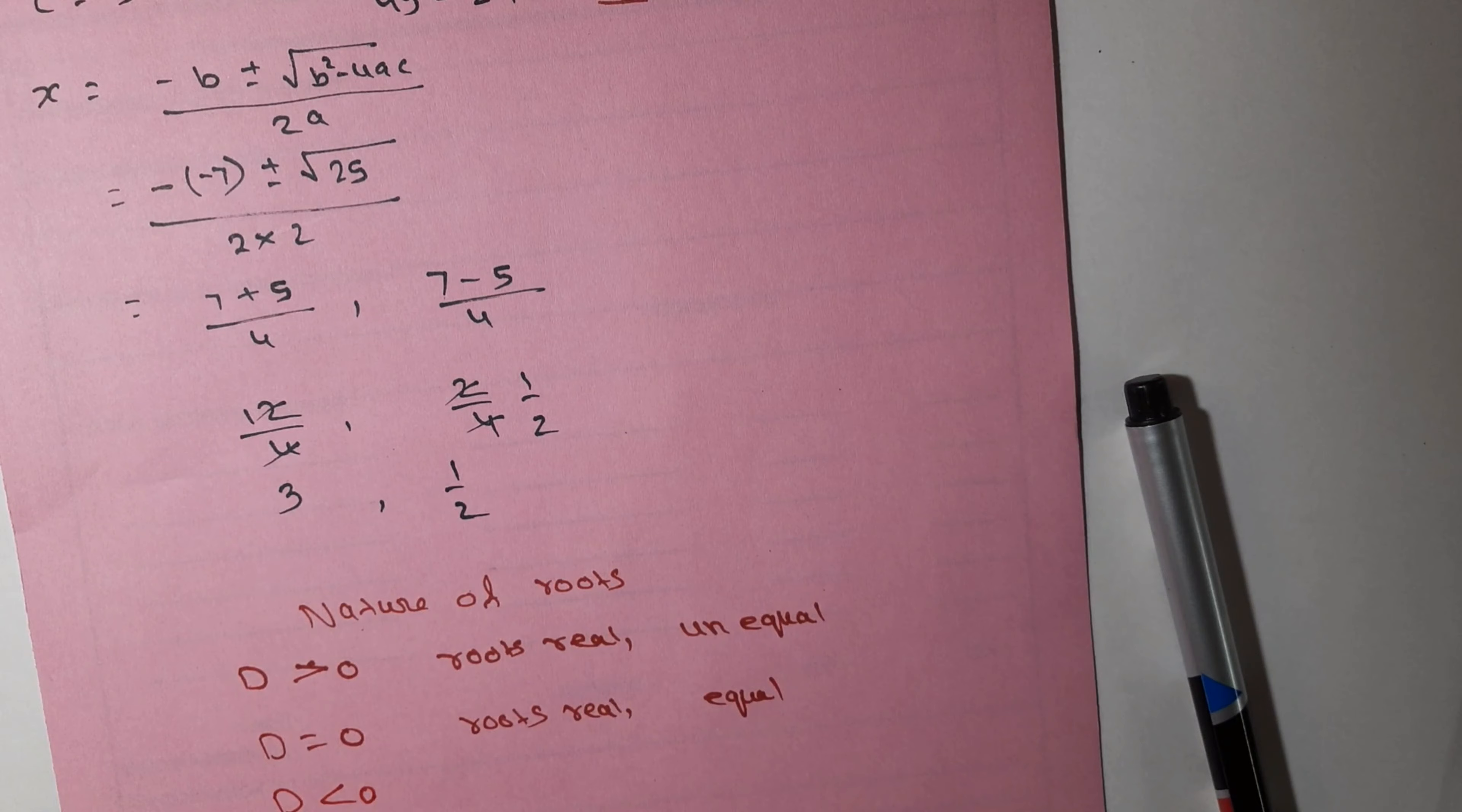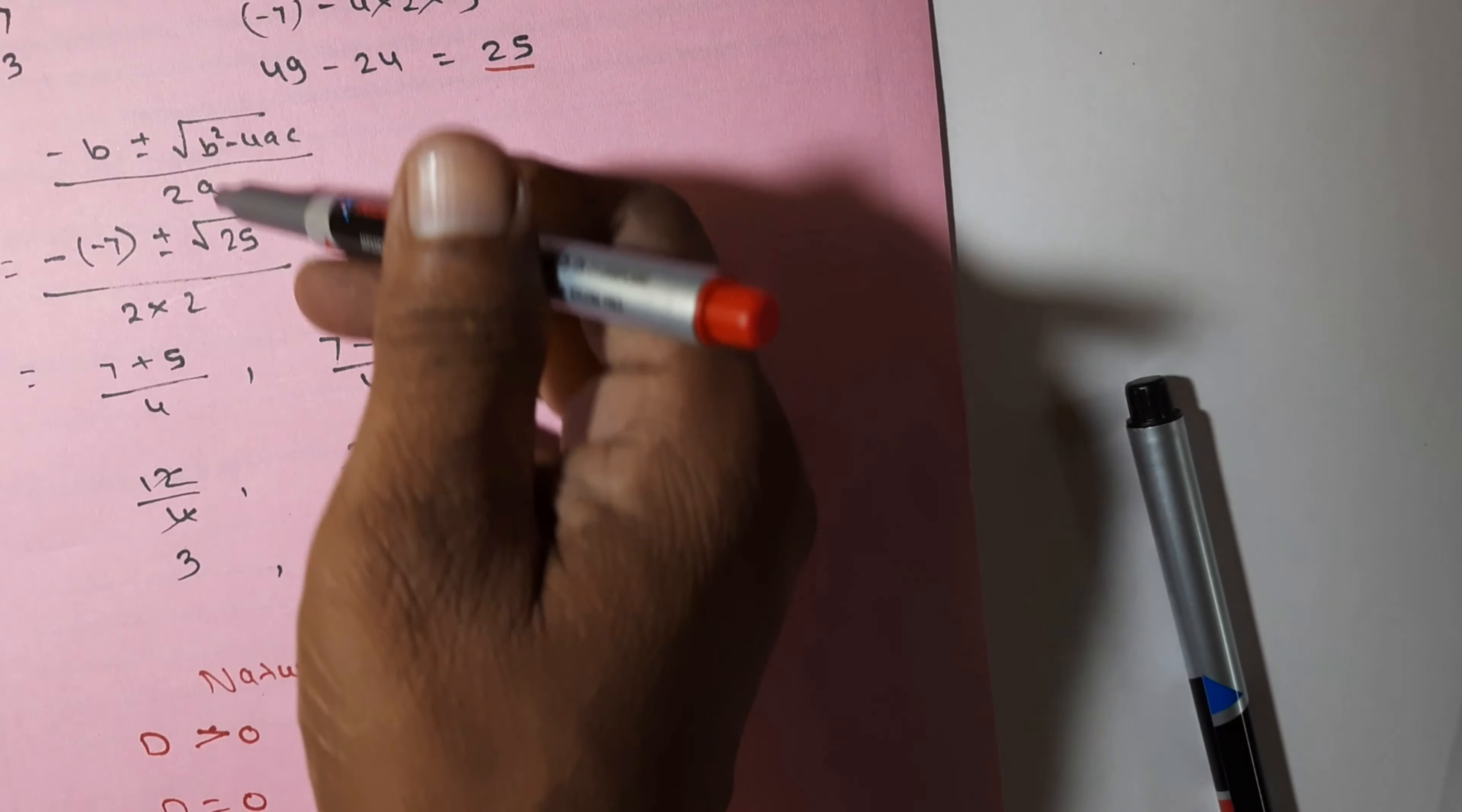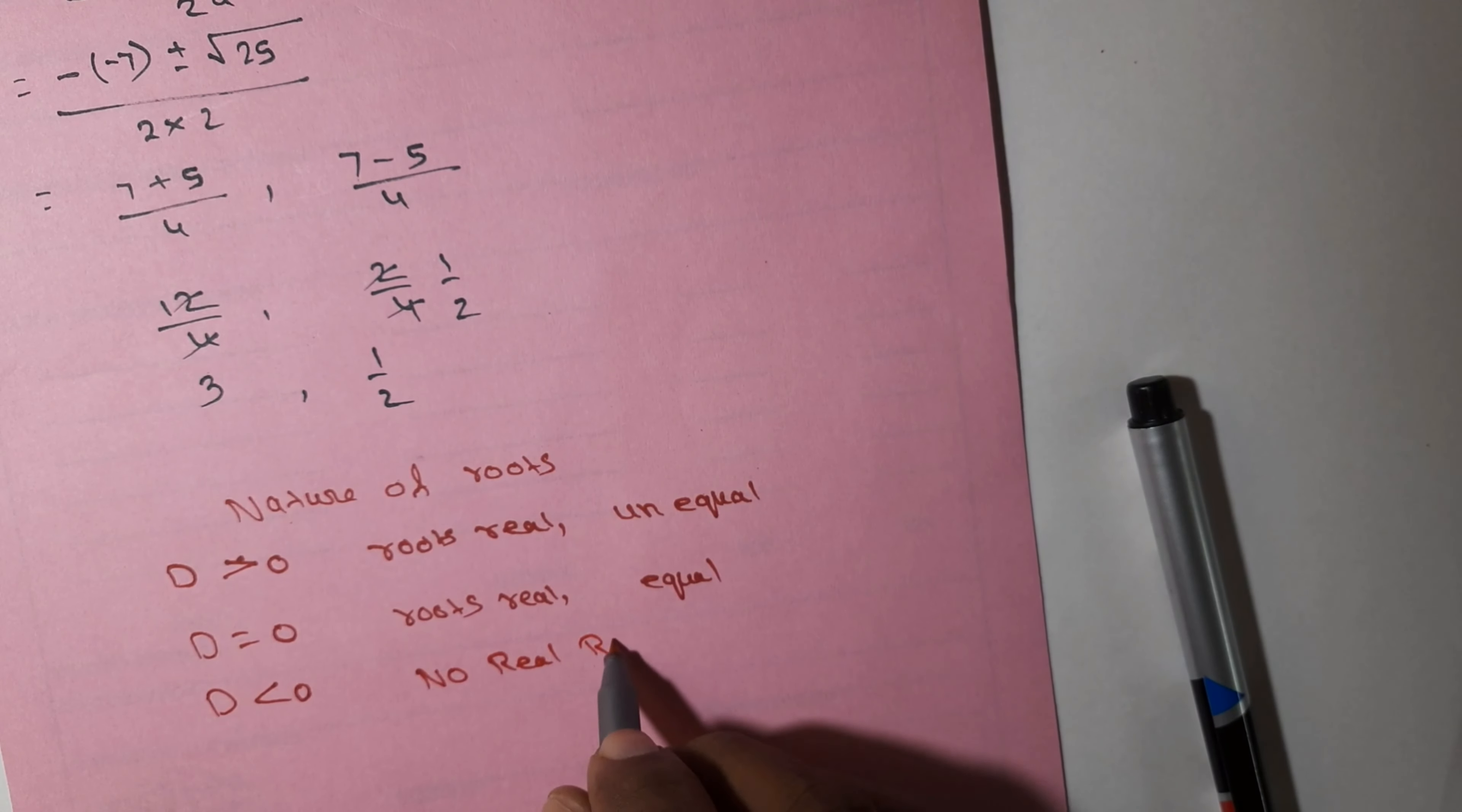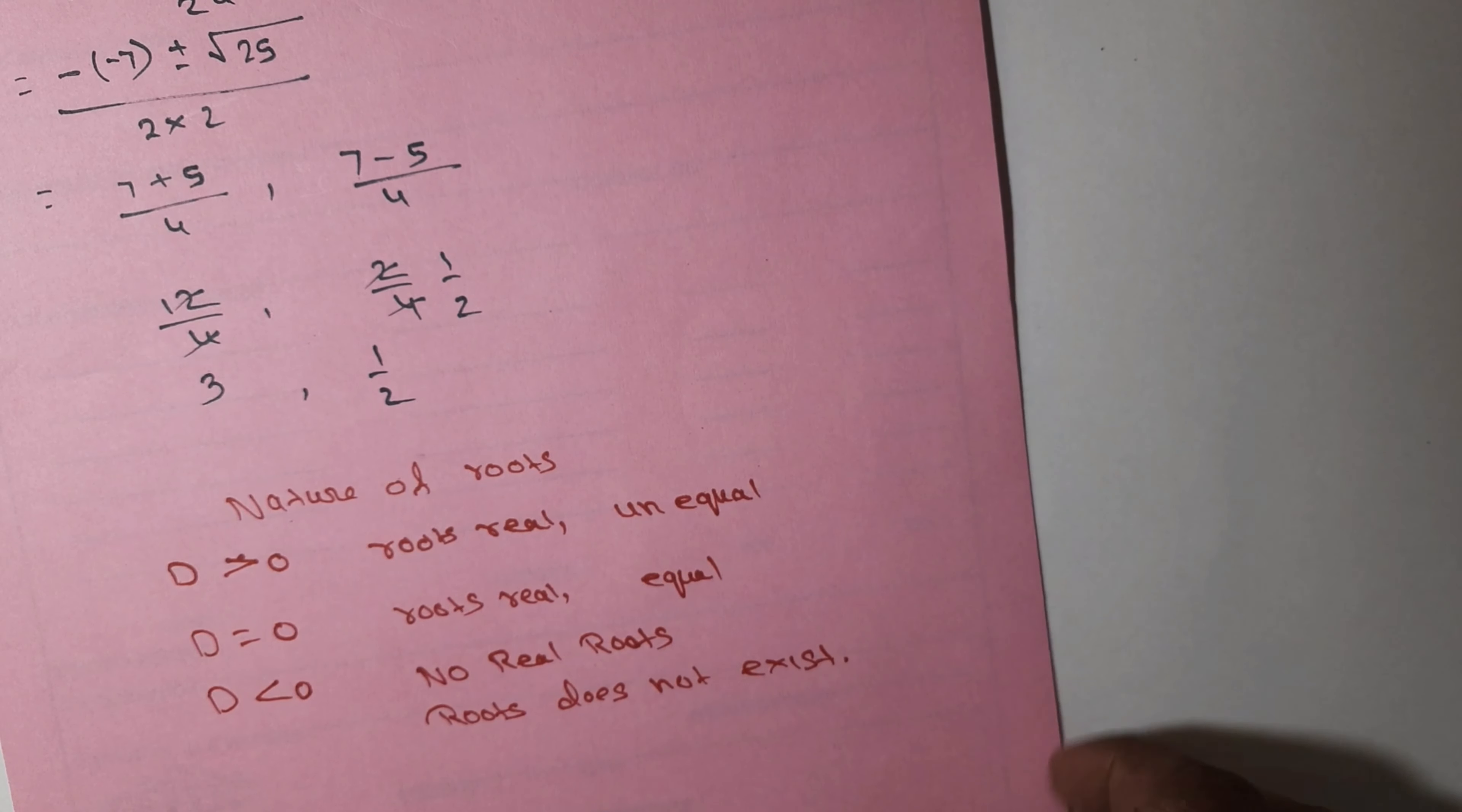If D < 0, that means if our D comes in minus, like -2 or -3, which is less than 0, then what happens? The square root of a negative number will not break. Then what happens? No real roots. That's all. Roots do not exist. When? When D < 0. So this is it. Now you will see all exercises of Chapter Number 4 are done.